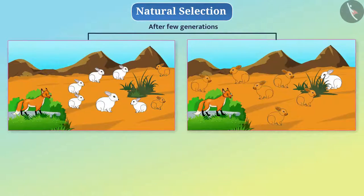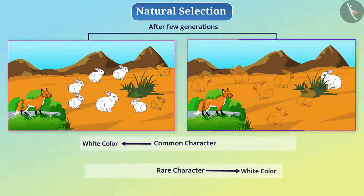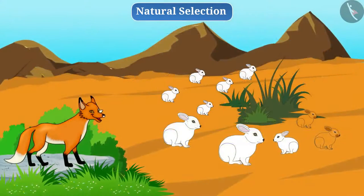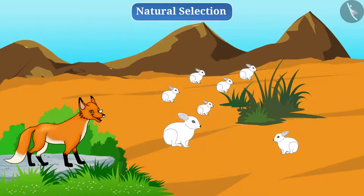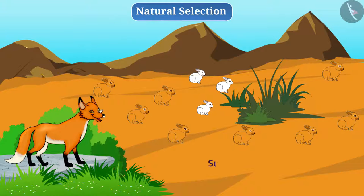After a few generations, the number of white rabbits will be much less than the brown rabbits. In this way, white colour that was initially a common characteristic in the rabbit population became the rare characteristic, while brown colour that was rare in the beginning now became the most common characteristic. If the brown variation had not emerged, the rabbit population would have reached the verge of destruction. But due to the variation of brown colour, the rabbit population is now getting the survival advantage.